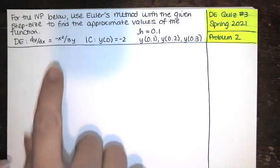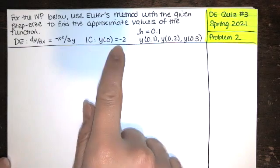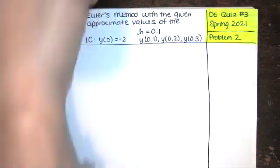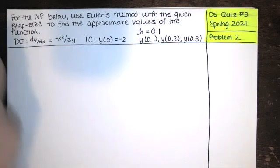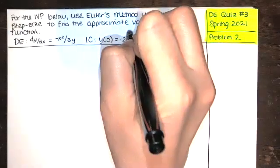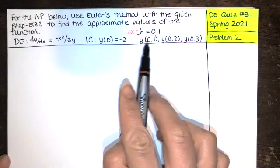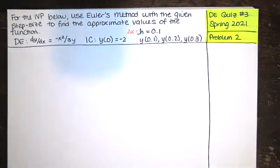We have this differential equation and this initial condition, and we're told that our step size is h equals 0.1. Sometimes people will use delta x equals 0.1 — either way is fine. We're asked to find, or approximate, y(0.1), y(0.2), and y(0.3).